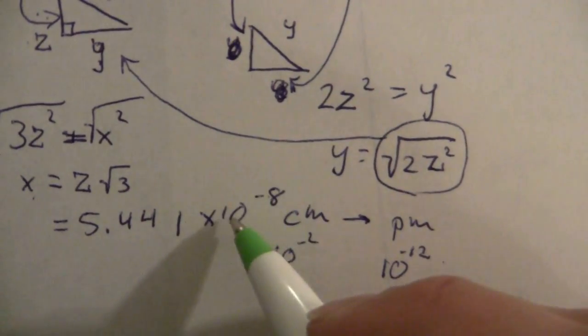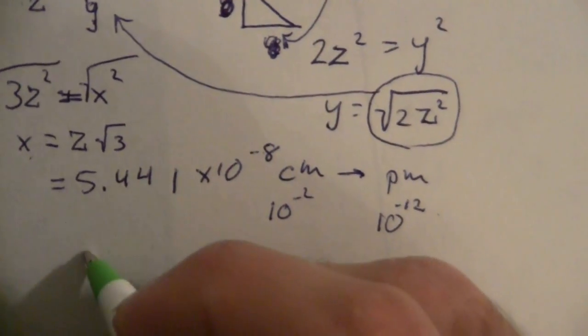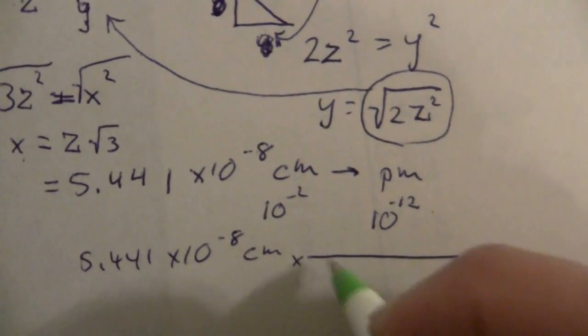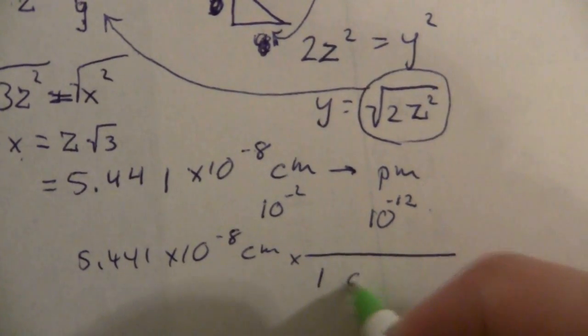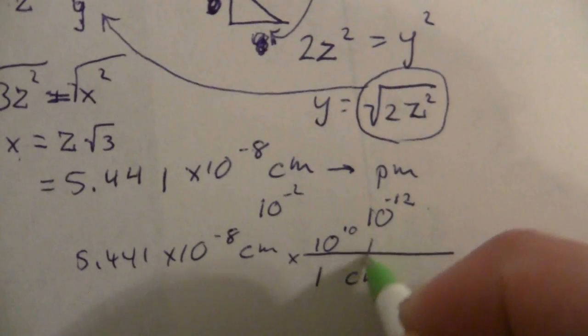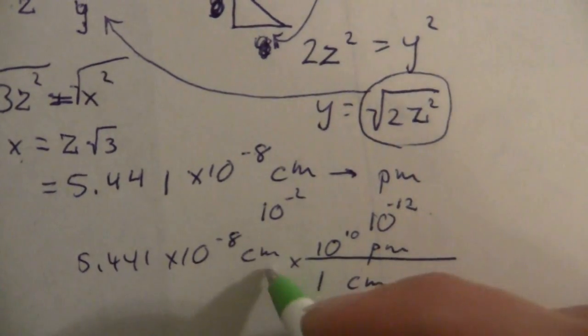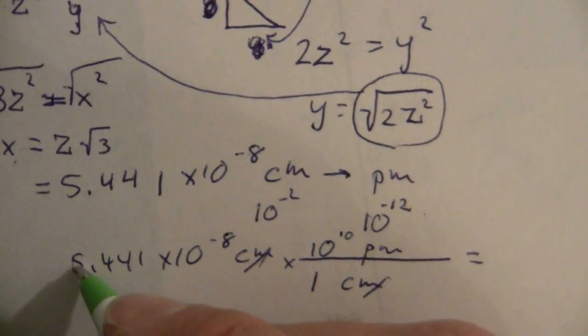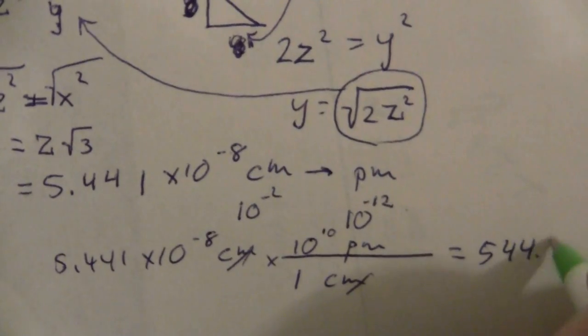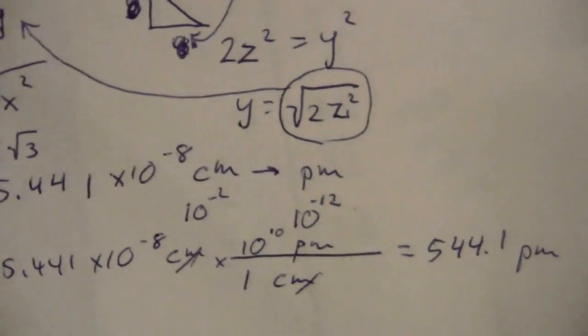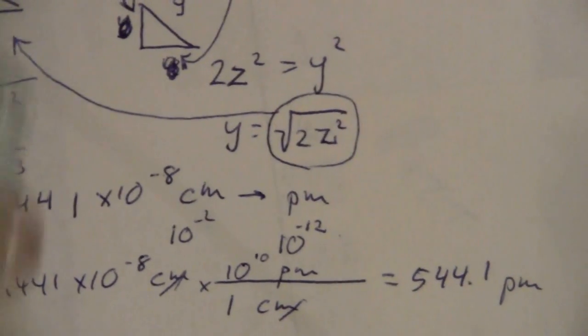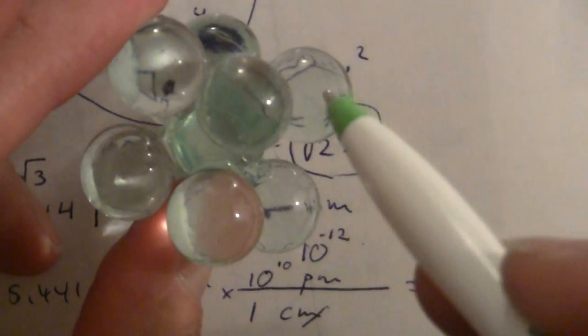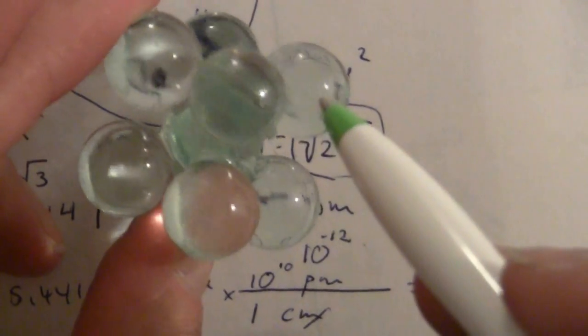And if we move that over, let me just write it out. 5.441 times 10 to the minus eighth centimeters times 1 centimeter is 10 to the tenth picometers. So I'm going to move my decimal 10 places to the right, or from here it will be 544.1 picometers. Now, this distance is the distance from here to there, across that diagonal.